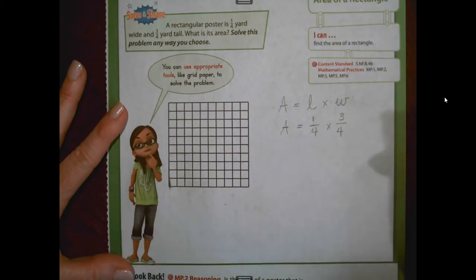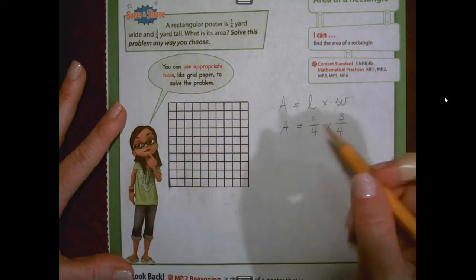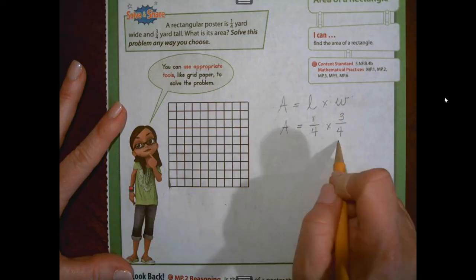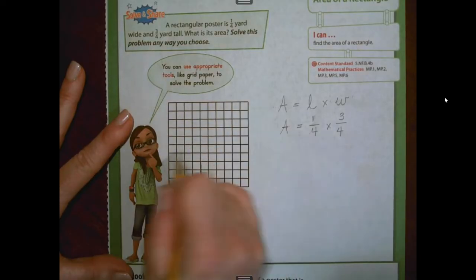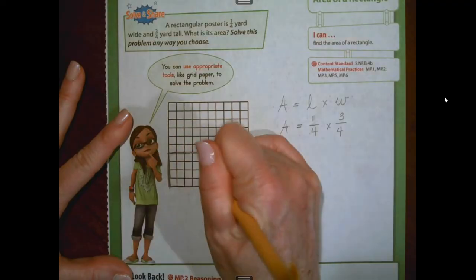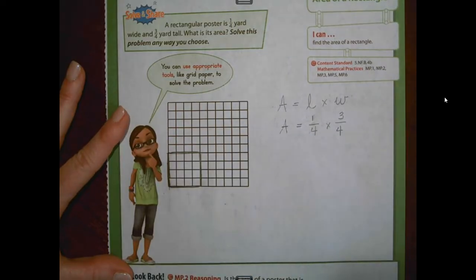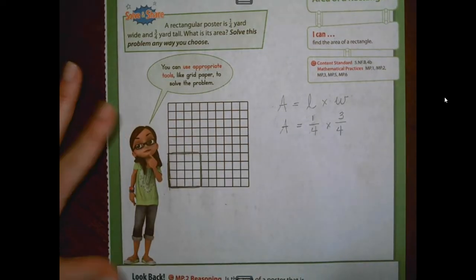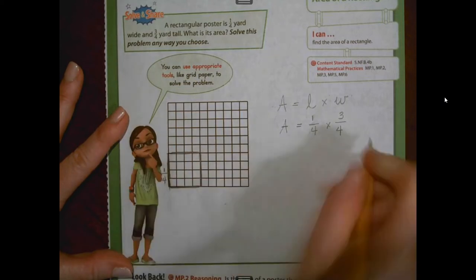Now, the girl here tells us that we can use grid paper as an appropriate tool to figure this out. So if we couldn't remember the formula or how to figure out area, maybe we can remember that we could draw it out with a model. So using the grid paper, and I'm working with fourths. So one whole would be four units one direction, four units the other.